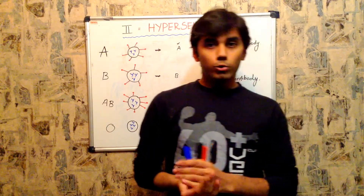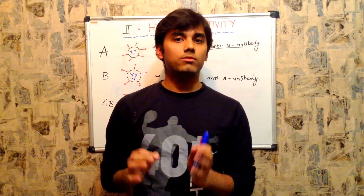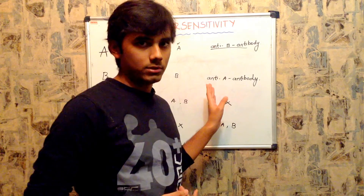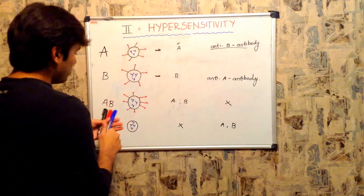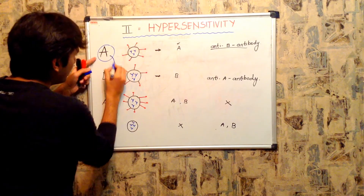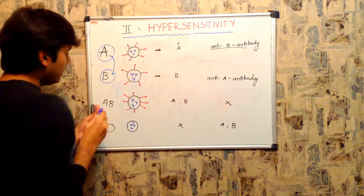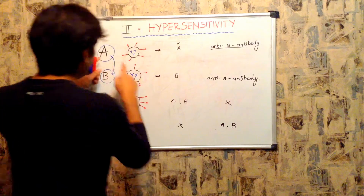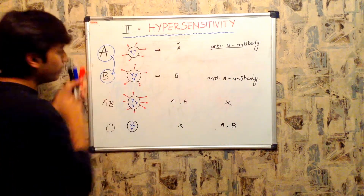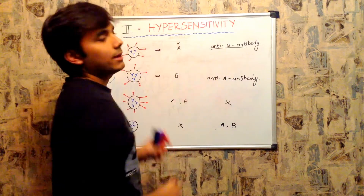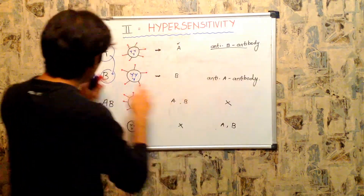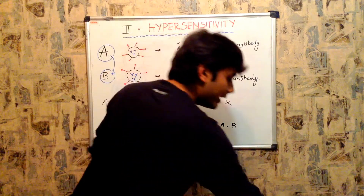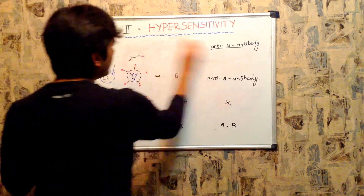Type 1 hypersensitivity is the most common type found in most clinics, whereas type 2 hypersensitivity is the least commonly occurring. Type 2 hypersensitivity is triggered when incompatible blood is transfused — for example, transfusing A blood group to a B individual, or transfusing AB blood group to an O individual.